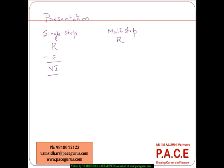In the multi-step format, we first look at revenues, then take only cost of goods sold. The difference gives the gross profit. From gross profit, we deduct selling, general, and administrative operating-related expenses, and even depreciation — since depreciation is also related to operating expenses.